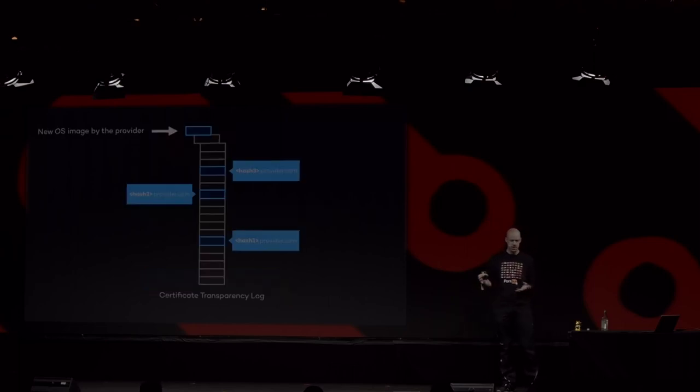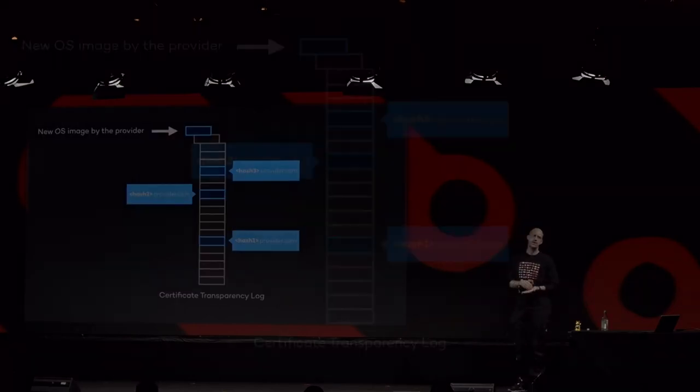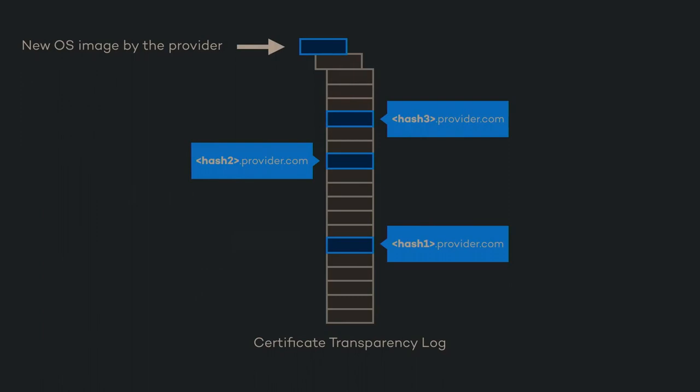The core idea of system transparency is that everybody else — users — can verify what's running on the system. To do that, we also require the platform owner to request a new X509 certificate for every operating system image they want to deploy on the server fleet. This certificate will contain the hash of the operating system image as part of the common name.